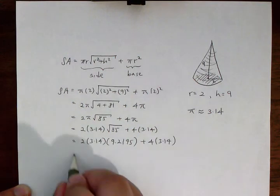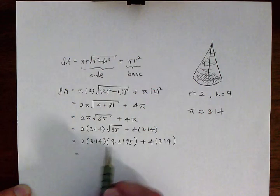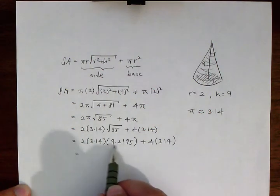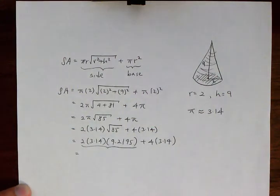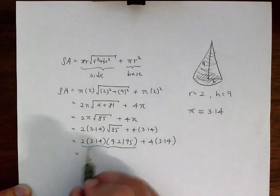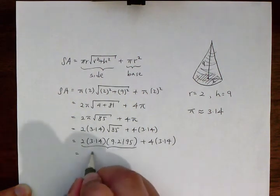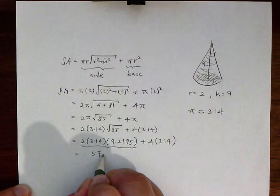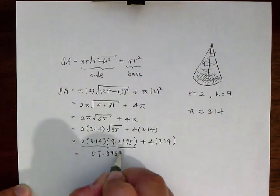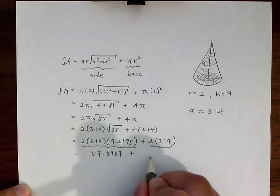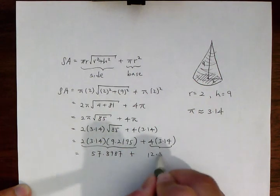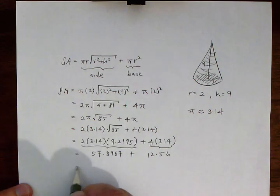What follows is to multiply through. We've got 2 times 3.14 times 9.2195. In the interest of efficiency, let's punch this into a calculator - this equals 57.8987, plus 4 times 3.14 which is 12.56. When we add these two terms together we get 70.4589.